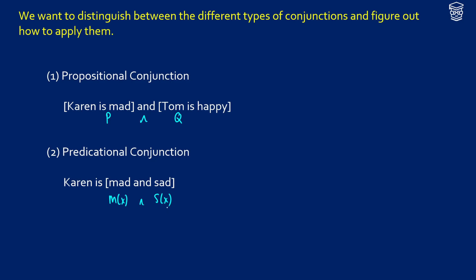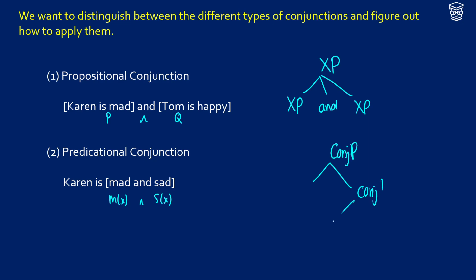This is going to be important because when we think about conjunction, what does it do? In a classic form of conjunction, you take two phrases of the same type, you join them with 'and,' and you get the same phrase out. What we're going to do is have a conjunction phrase with a conjunction bar hosting 'and,' with our XPs on the sides, so we can do it one at a time with binary composition.